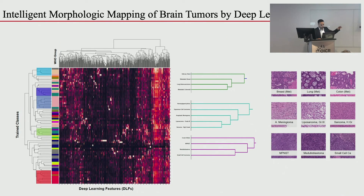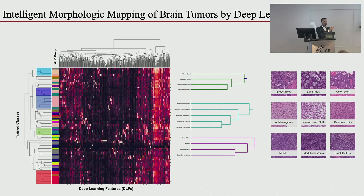There's a metastatic cluster — the brain is a common site of metastases. You have breast, lung, and colon cancers grouping together as glandular tumors. To call something lung cancer, we need to see expression of TTF1, so these are objectively grouped based on transcription factors, and the computer is grouping them based on morphological properties. There's also a sarcomatoid group with anaplastic meningiomas, liposarcoma, and high-grade sarcoma, and what appears to be a small blue cell cluster with malignant peripheral nerve sheath tumor, medulloblastoma, and small cell carcinoma.